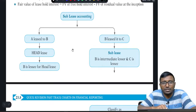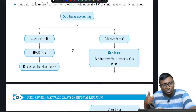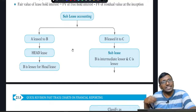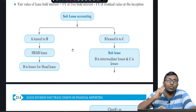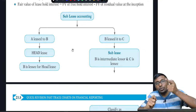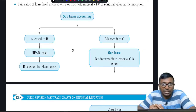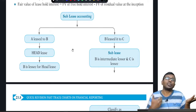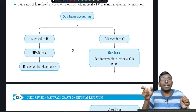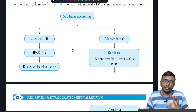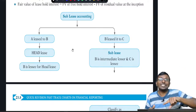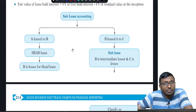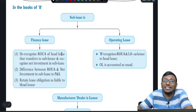Sub-lease accounting: if A leases to B, and B leases to C, then A's accounting is simple as lessor, and C's accounting is simple as lessee. B's accounting is crucial because B is a lessee under the first agreement and a lessor under the second. B has an obligation to pay lease rentals to A and a right to receive from C. So B will have a right-of-use asset and a lease payment liability in its books. If the first lease is a finance lease for B, then B can grant a finance lease to C; otherwise, the B-to-C lease will always be an operating lease.